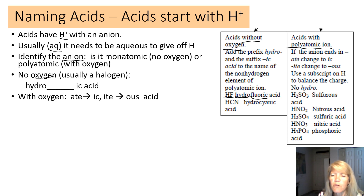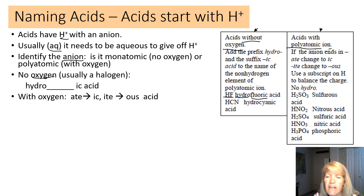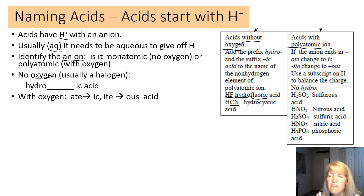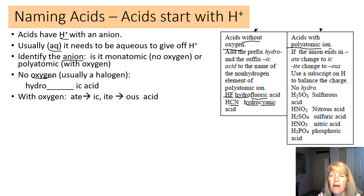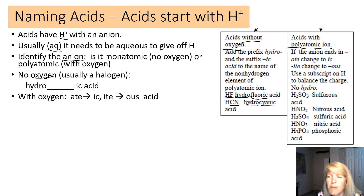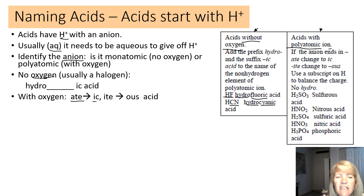HCl becomes hydrochloric acid. There's also a polyatomic ion in this category: CN⁻ has no oxygen, so we apply the same rule — that becomes hydrocyanic acid. For acids that do have oxygen, we're dealing with a polyatomic ion: if the ion ends in -ate, change the ending to -ic; if it ends in -ite, change to -ous.